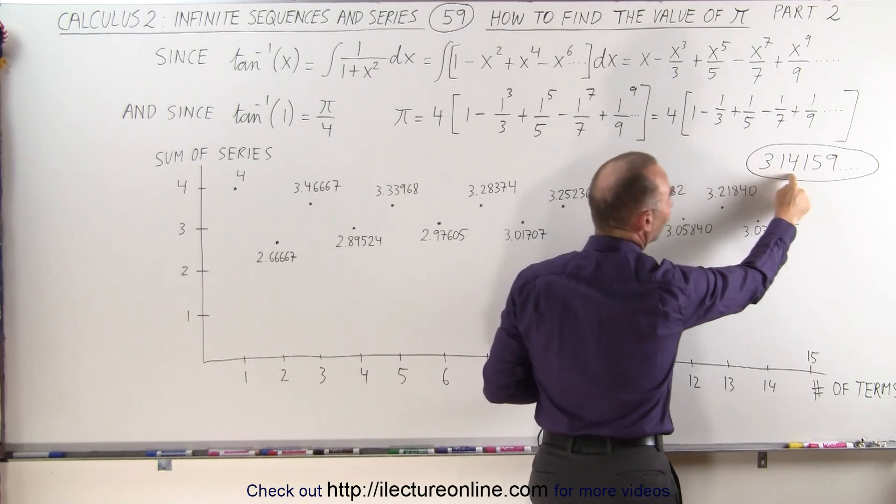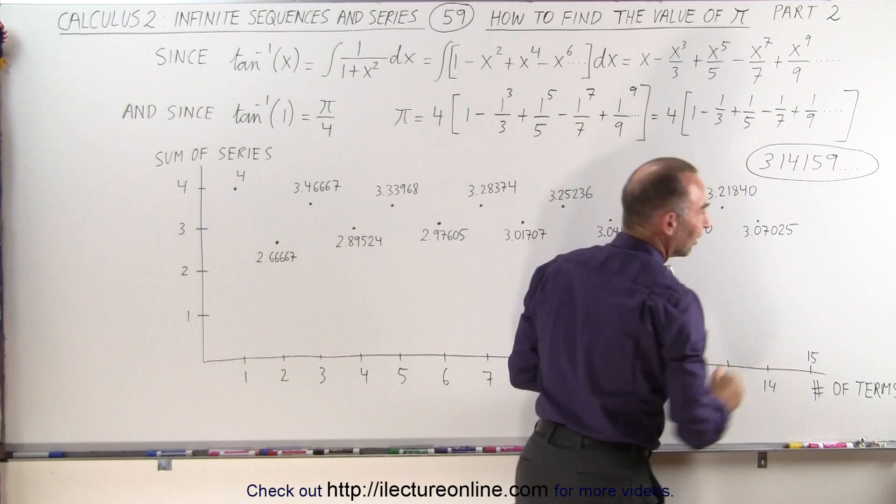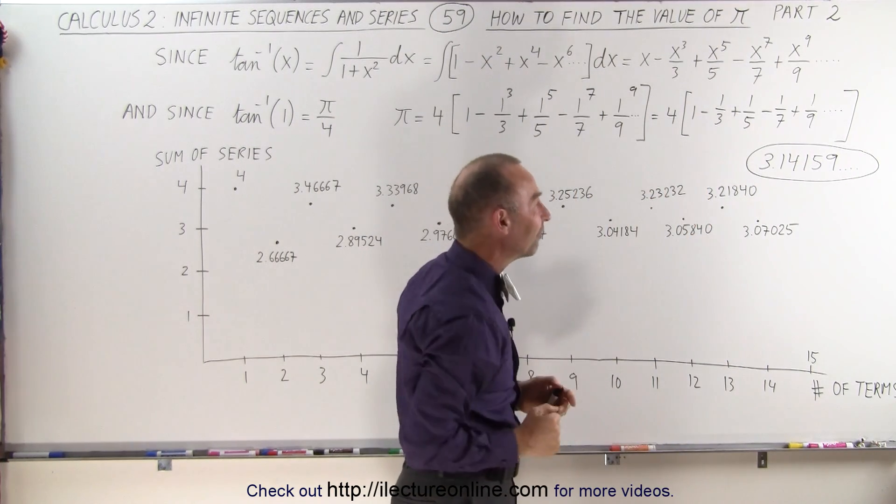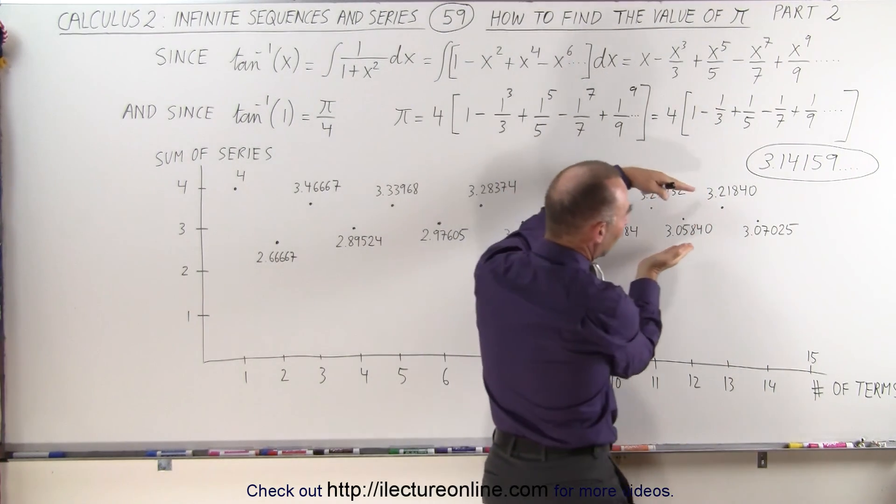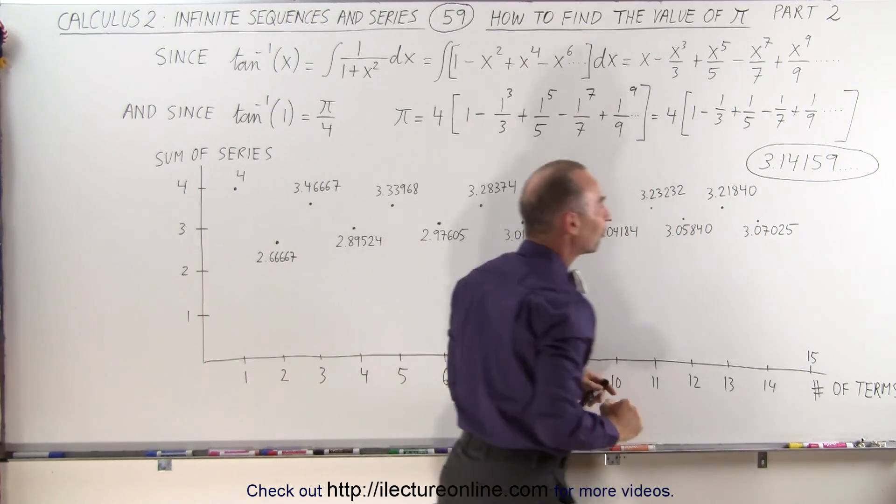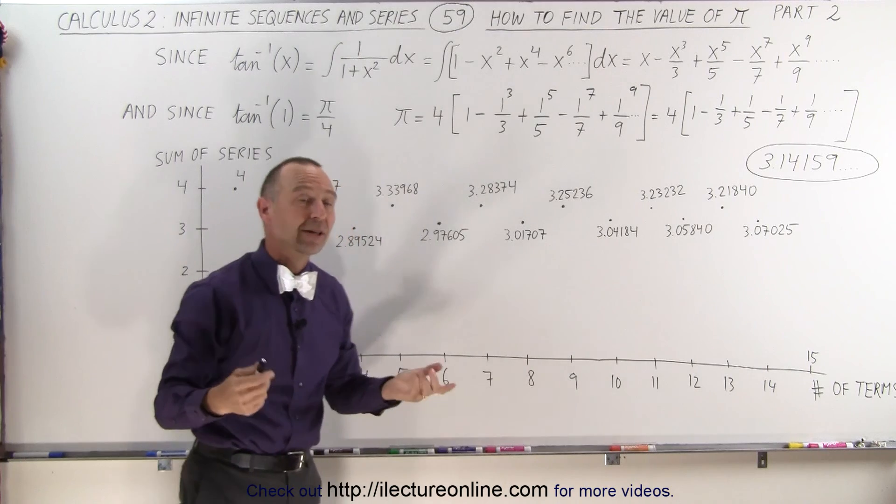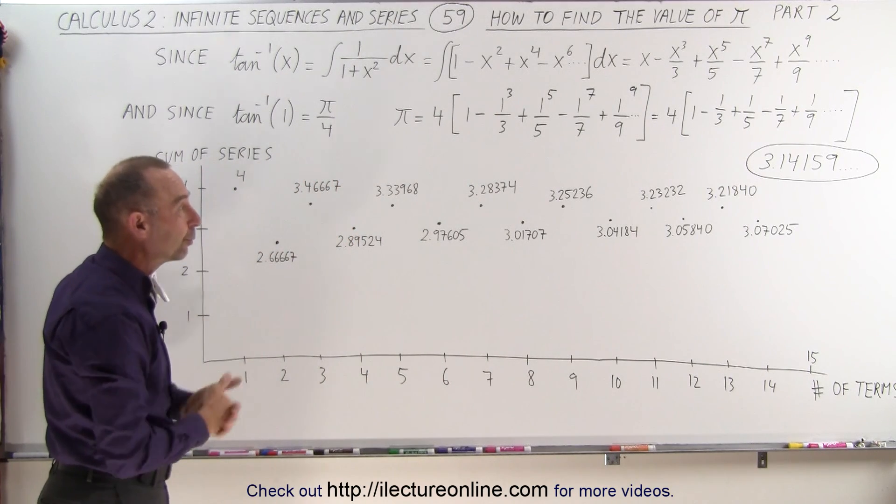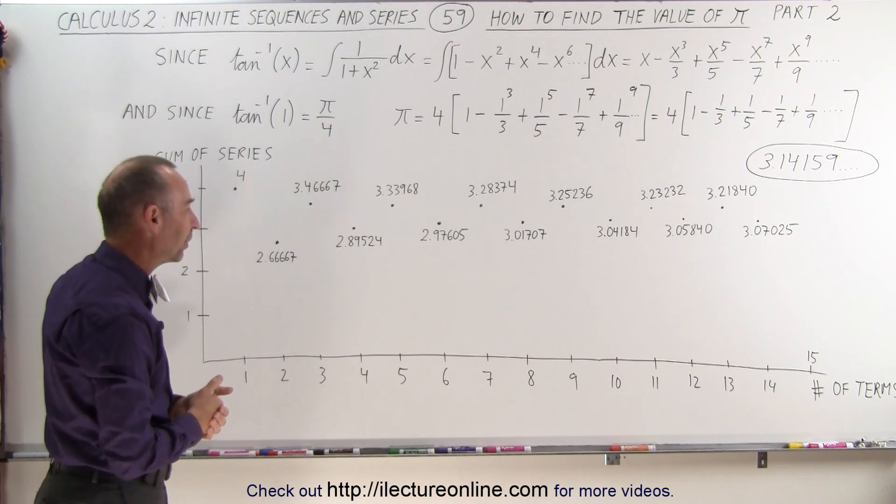Now this is the number pi to five decimal places. Of course, they're non-repeating decimal places, they continue on forever, but you can see how that series, as we keep adding more and more terms, begins to converge to that very famous and most known number, 3.14159 to five decimal places.